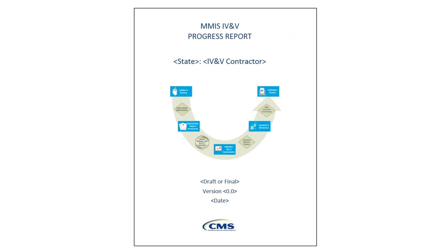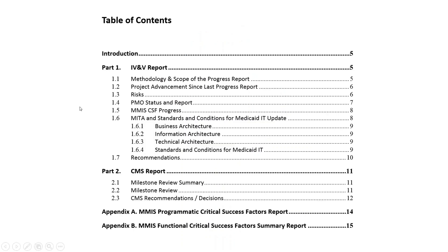The MMIS IV&V progress report template is what the IV&V contractor and CMS use to track progress toward certification. The report is divided into two major sections: one for the IV&V contractor to fill out, including Appendix A, and the second is for CMS to include its comments. The project management critical success factors are found in Appendix A. The technical critical success factors are located in the checklist. The completed checklists are appended to the report before it is submitted to CMS and the state.